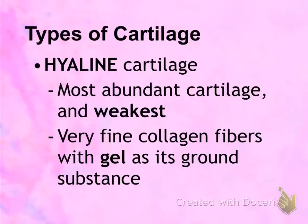There are three types of cartilage. The first one is called hyaline cartilage. Hyaline means glass, because hyaline cartilage has a shiny, almost transparent, glassy appearance. It is the weakest out of the three cartilages. It has fine collagen fibers, and because of this lack of collagen fibers, it can tear easily. It has gel as its ground substance.